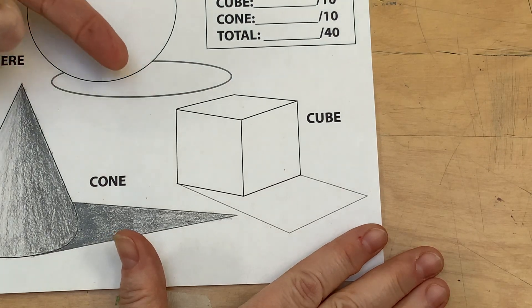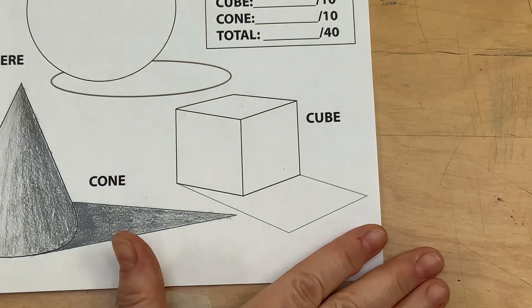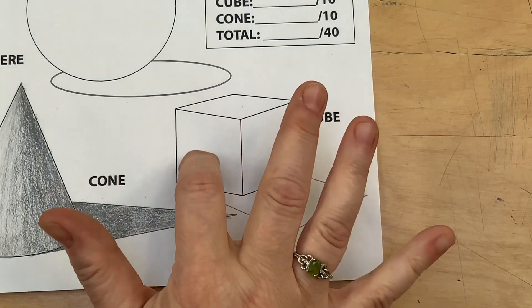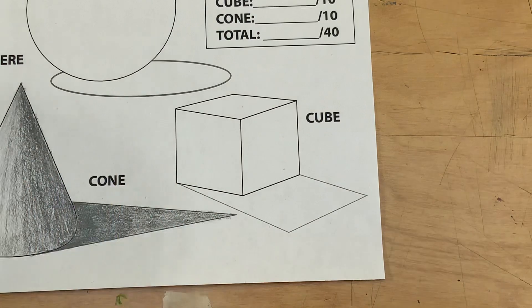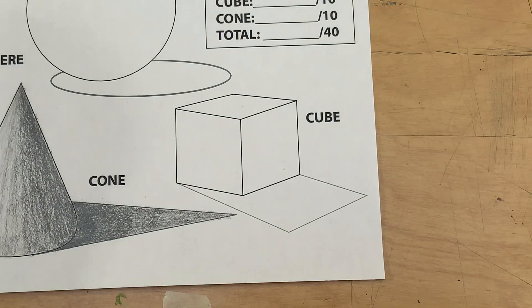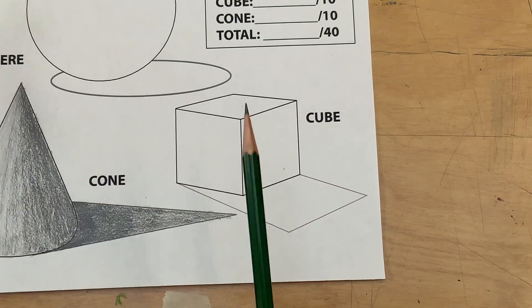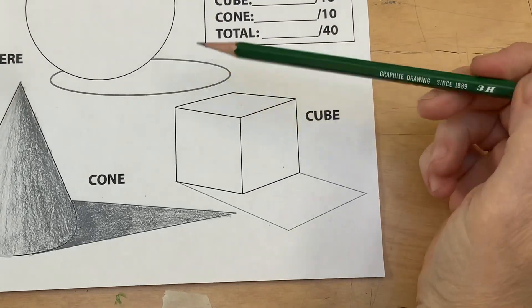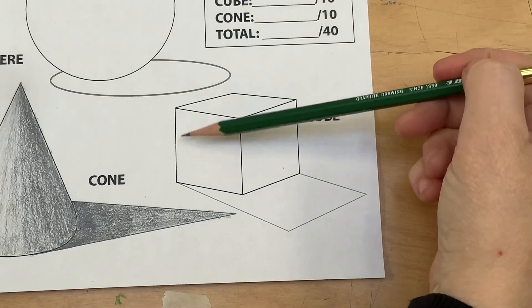If the light is coming from over here still on this left-hand side, the top and this side are going to be sort of our brightest ones. So we're going to be working with some H pencils. I'm going to say that this is pretty much going to be somewhat in the white family.